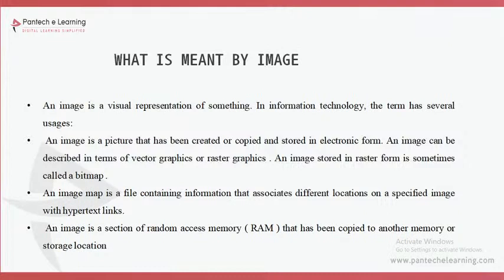Vector and raster are two different categories of digital images. Analog images are things like television images and hard copies — these all come under analog images. In image processing, we process digital images, so we want to know deeply about digital images.